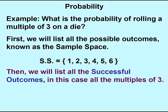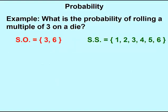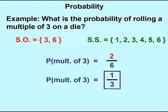Next, we list all the outcomes that would be classified as being successful — in this case, all the multiples of three. So from our sample space, that would include three and six. Now we can calculate our probability. The probability of rolling a multiple of three on a die would be two out of a total of six possible outcomes. We can reduce this just like we can with any fraction, giving us a probability of one third.